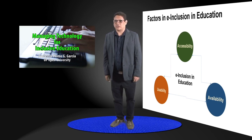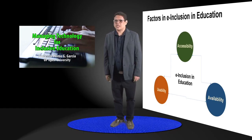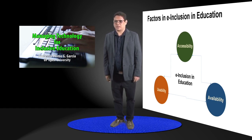There are several factors in e-inclusion in education: accessibility, usability, and availability. Accessibility refers to the degree to which a product — like a device, a service, or an environment — can be used both from a physical and cognitive viewpoint by as many people as possible.